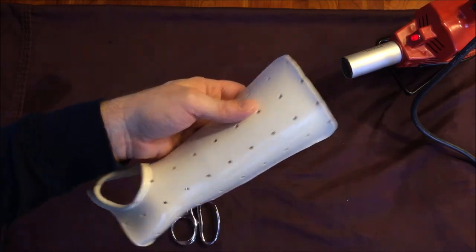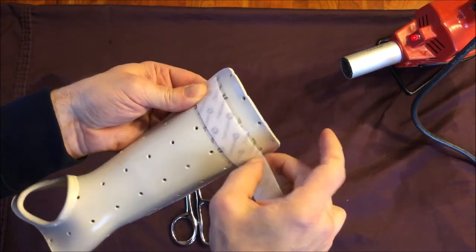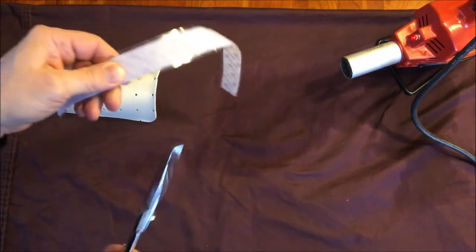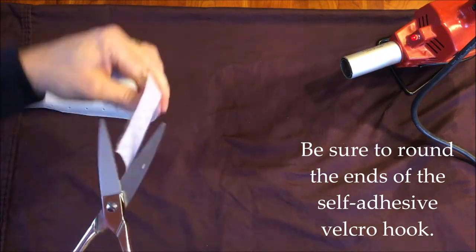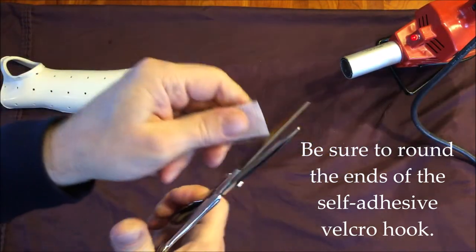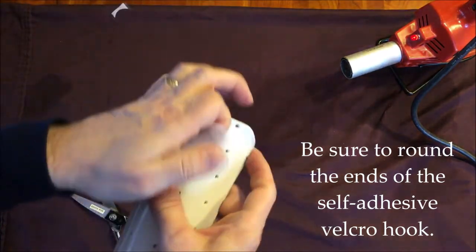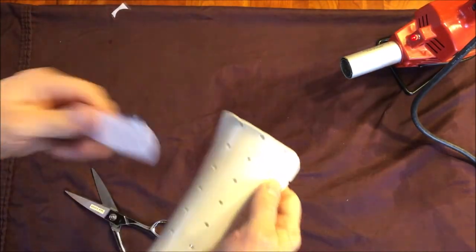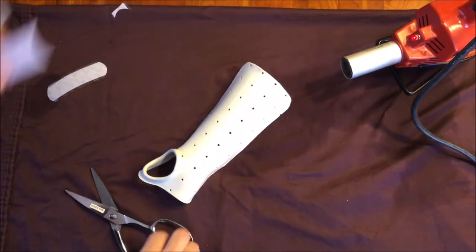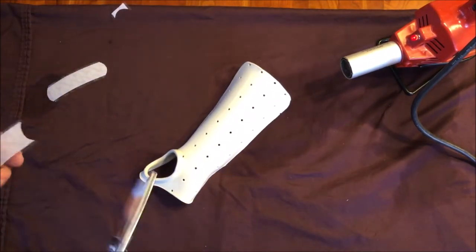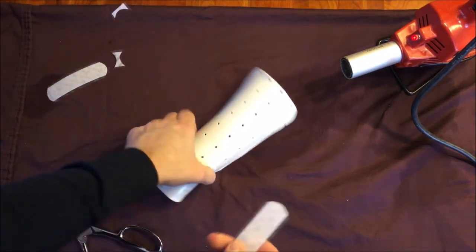Next we're going to cut our self-adhesive velcro hook to adhere to the orthosis. Just kind of measuring it out there and be sure to round the ends of the self-adhesive velcro hook. The ends should be nice and rounded, not have square corners. That will help the velcro hook to stay stuck and not pull off later. If you leave the corners square, those square corners will pull off pretty quickly.